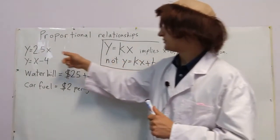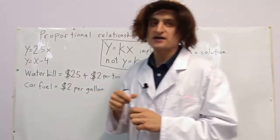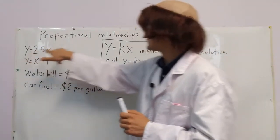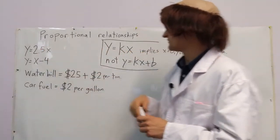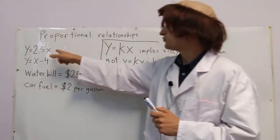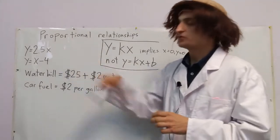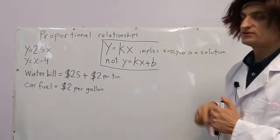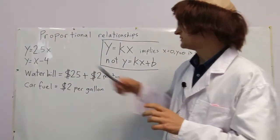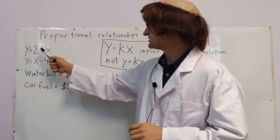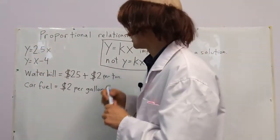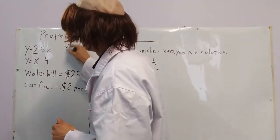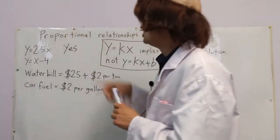Our first example, y equals 2.5x. This is exactly that, k equals 2.5. This is proportional. Also, you can check 0, 0. Is that a solution? 0 equals 2.5 times 0. This is proportional. Alright. Yes! Yes!